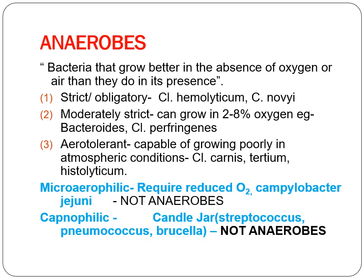Two other groups are different: microaerophilic and capnophilic — these are not anaerobes, though we sometimes get confused. Microaerophilic bacteria require a reduced amount of oxygen, that is 5–7% oxygen, like Campylobacter jejuni. Capnophilic organisms need a certain amount of CO2 for better growth — for them we provide the candle jar. Candle jar does not create anaerobic conditions. Bacteria such as Streptococcus, Pneumococcus, and Brucella are capnophilic, needing 5–7% CO2 for better growth.